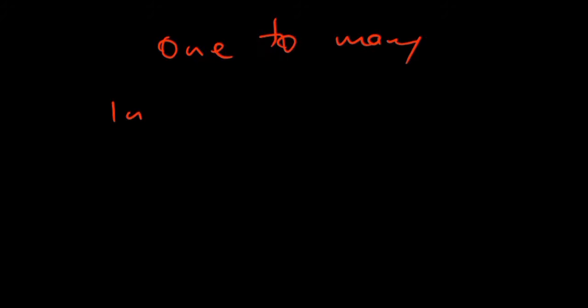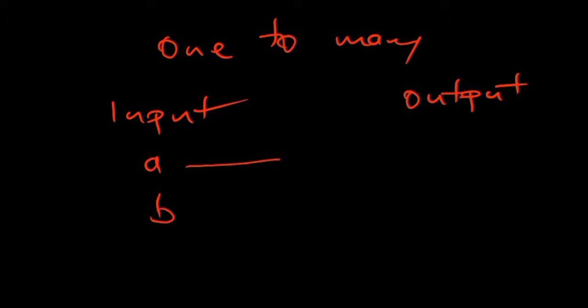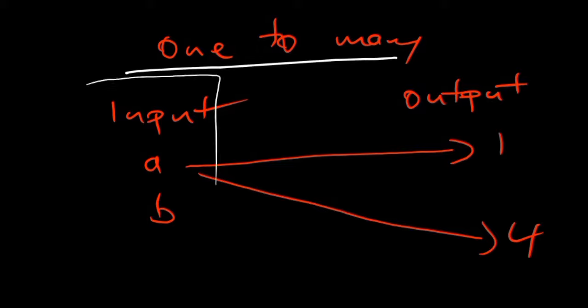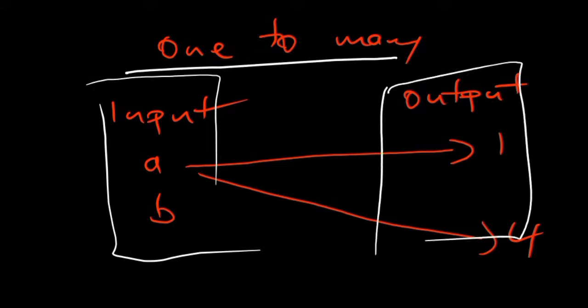Since we have many-to-one, you might guess there is also one-to-many. But if one input is producing two different outputs — say a maps to both 1 and 4 — this is NOT a function. It's just a relation between two sets. So one-to-many relationships are not functions.